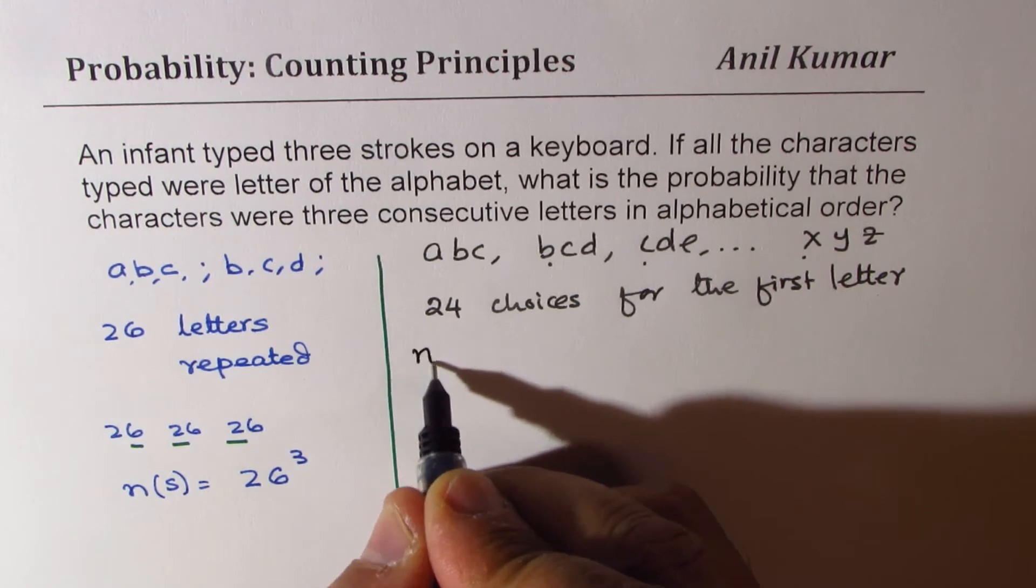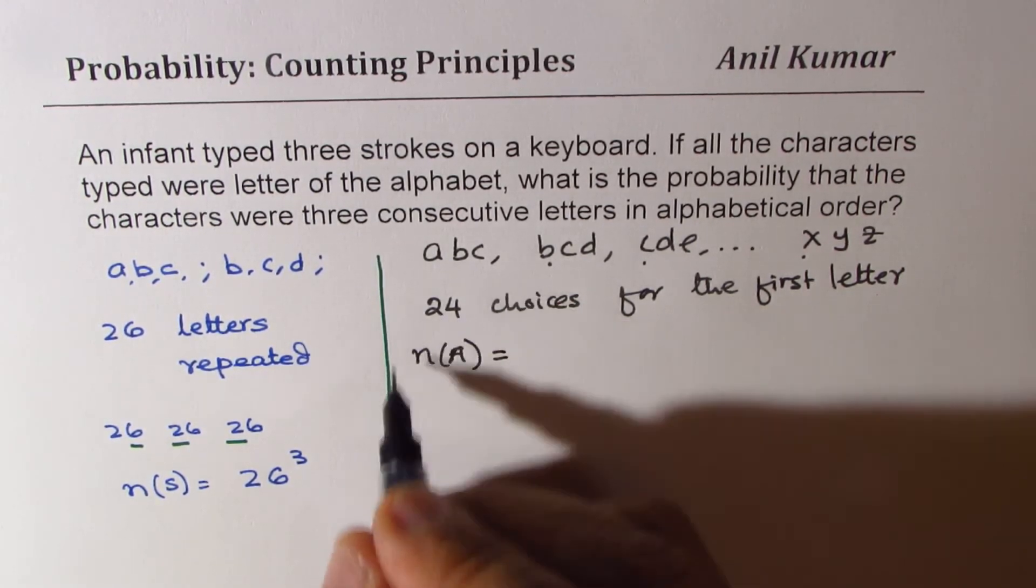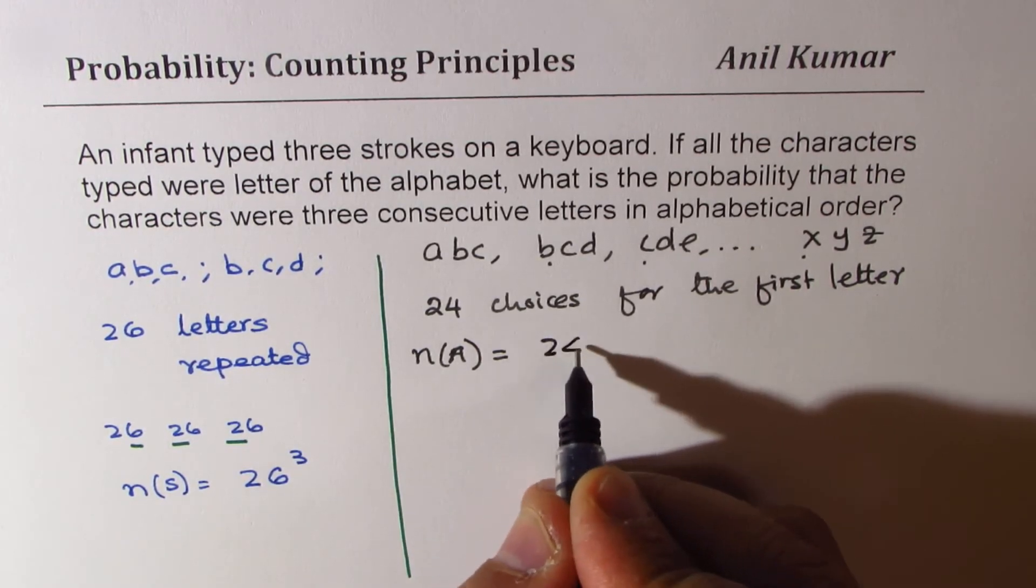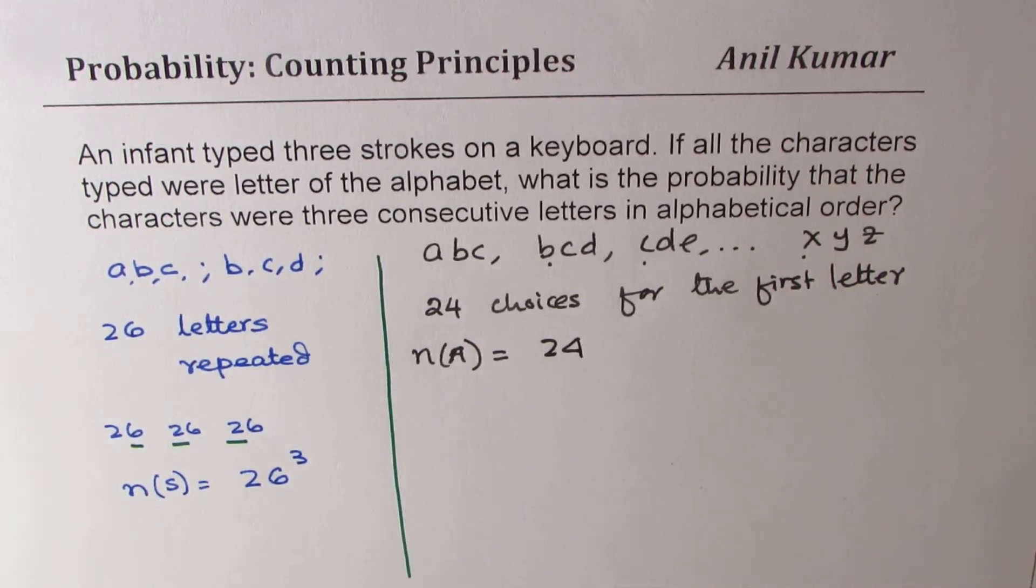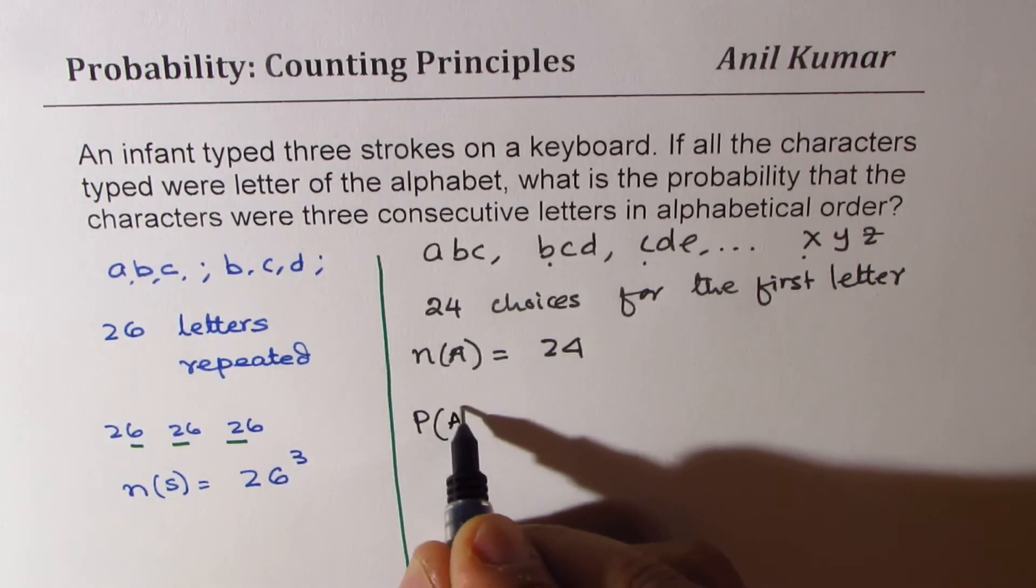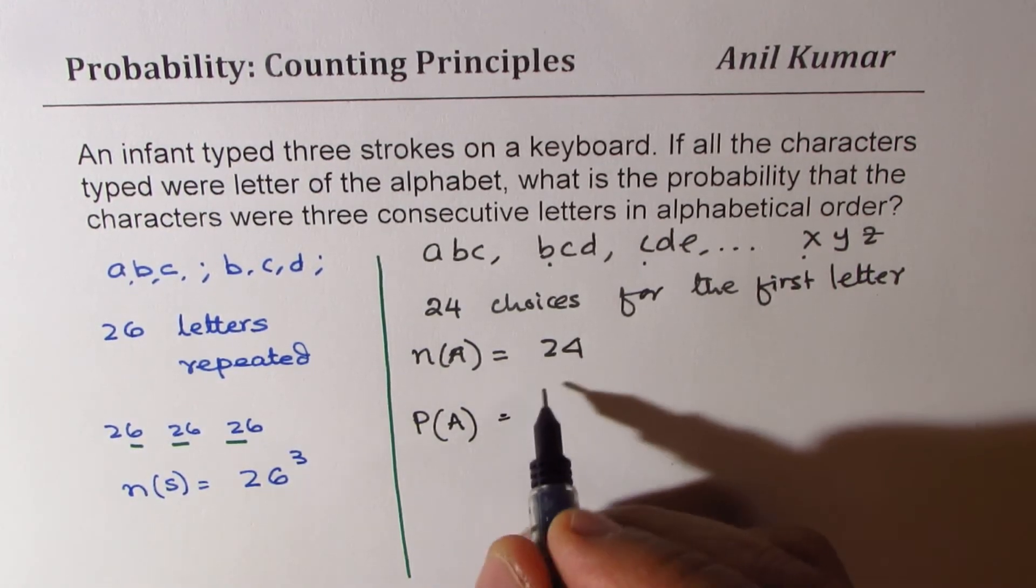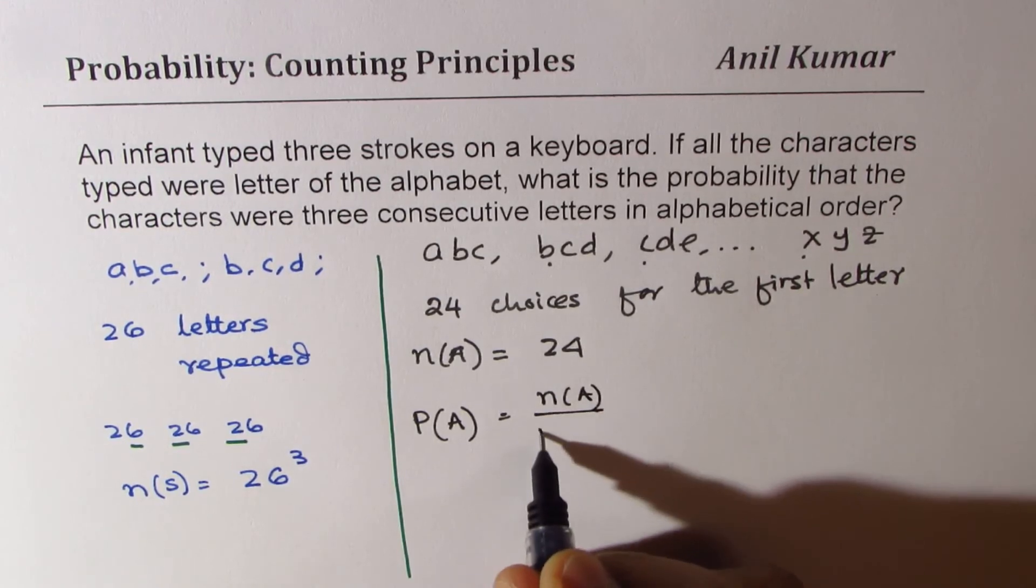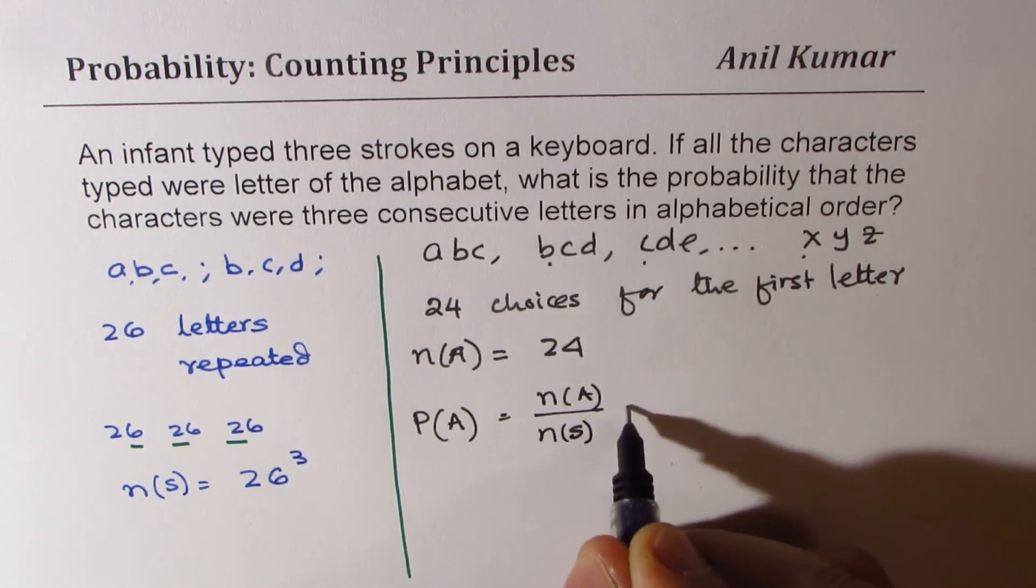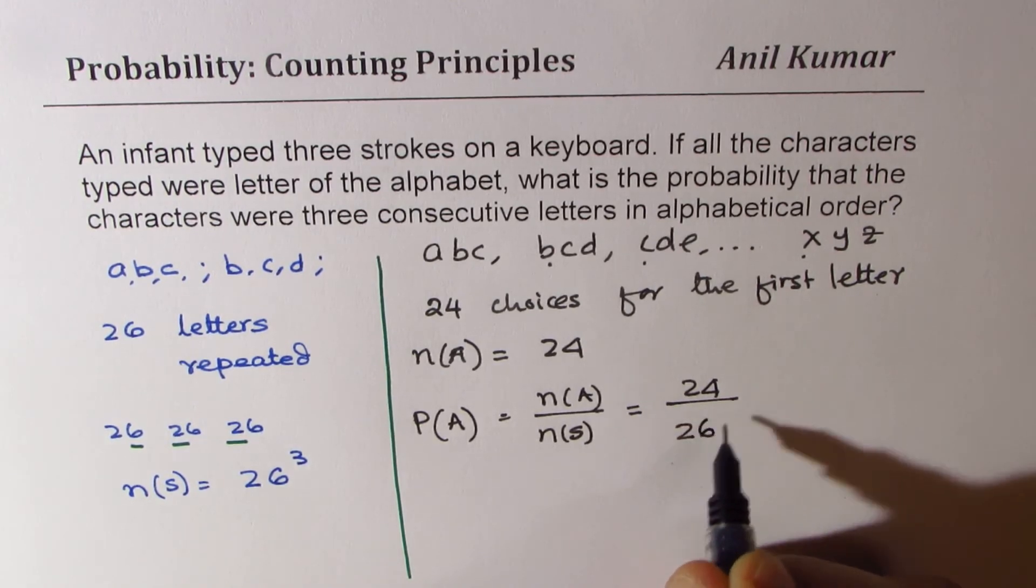So favorable outcomes, let's say our event is A, then the favorable is only 24. That means getting them in order. So the probability for getting all three letters in order will be n(A) over n(S), which is 24 over 26 cubed.